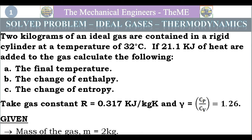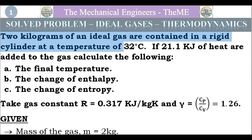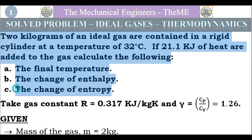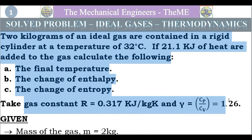First I will read the question. Two kilograms of an ideal gas are contained in a rigid cylinder at a temperature of 32 degrees Celsius. If 21.1 kilojoules of heat are added to the gas, calculate the following: A) the final temperature, B) the change of enthalpy, C) the change of entropy. Take gas constant R = 0.317 kilojoules per kg·K and gamma (Cp/Cv) = 1.26.